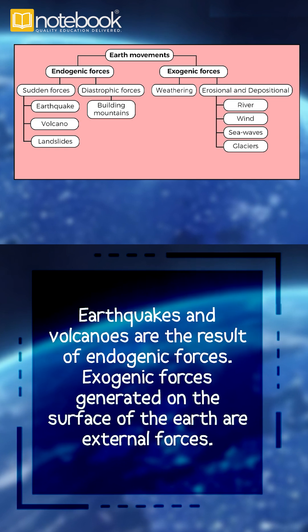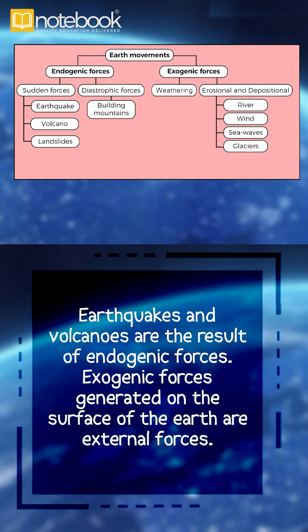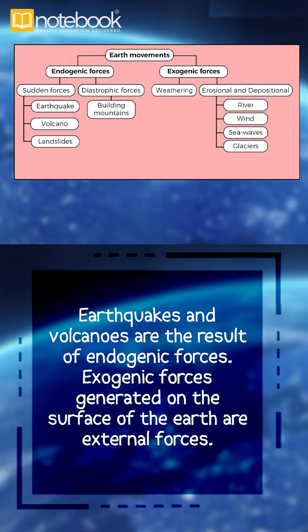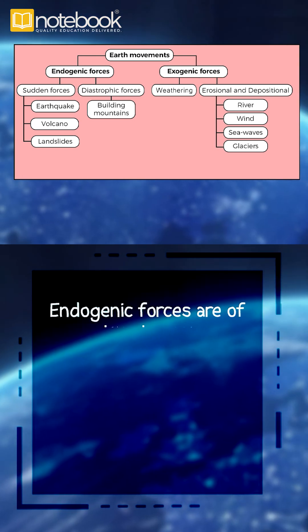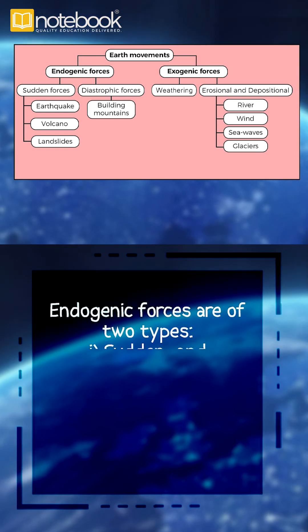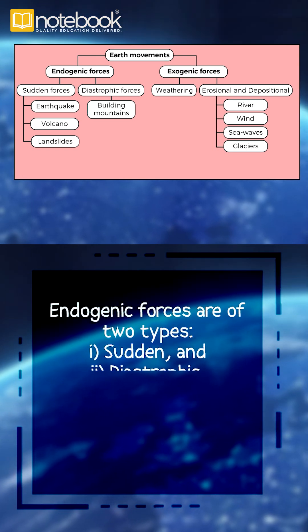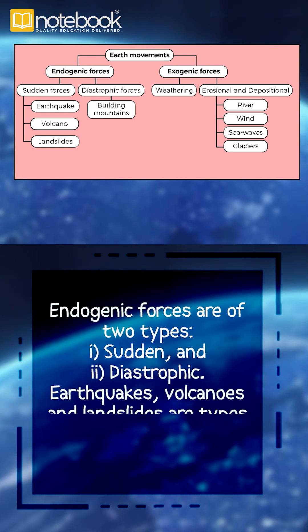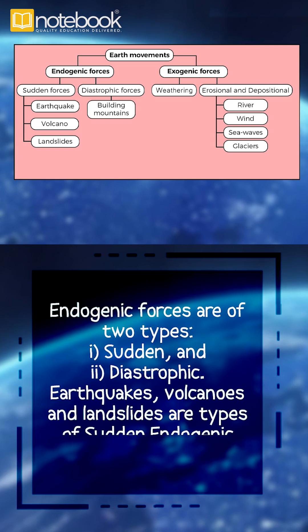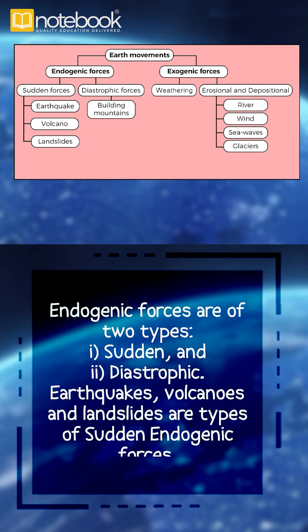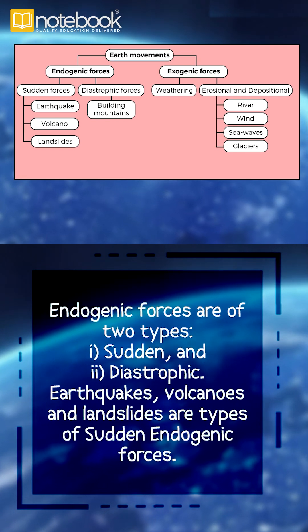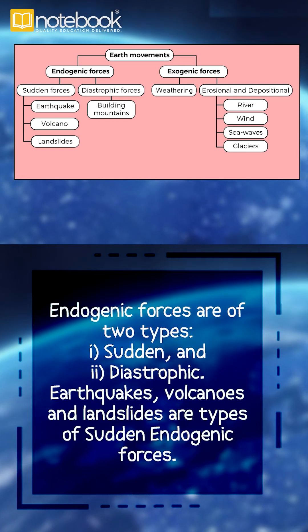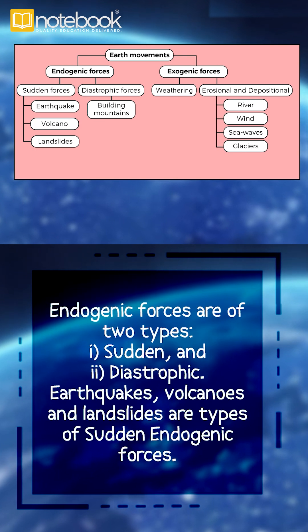Exogenic forces are generated on the surface of the Earth and are external forces. Endogenic forces are of two types: sudden and diastrophic. Earthquakes, volcanoes, and landslides are types of sudden endogenic forces.